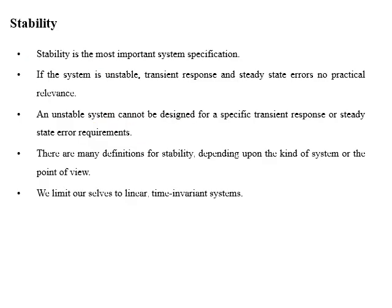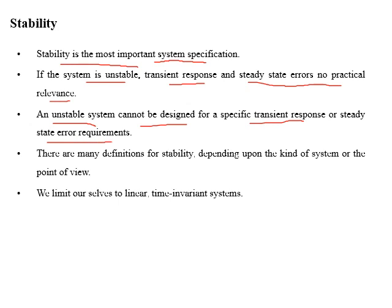Stability is the most important specification of a system. If a system is stable, then you can find the transient response or check steady-state error specifications. But if your system is unstable, then transient response and steady-state error have no practical relevance. An unstable system cannot be designed for specific transient response specifications or steady-state error requirements.